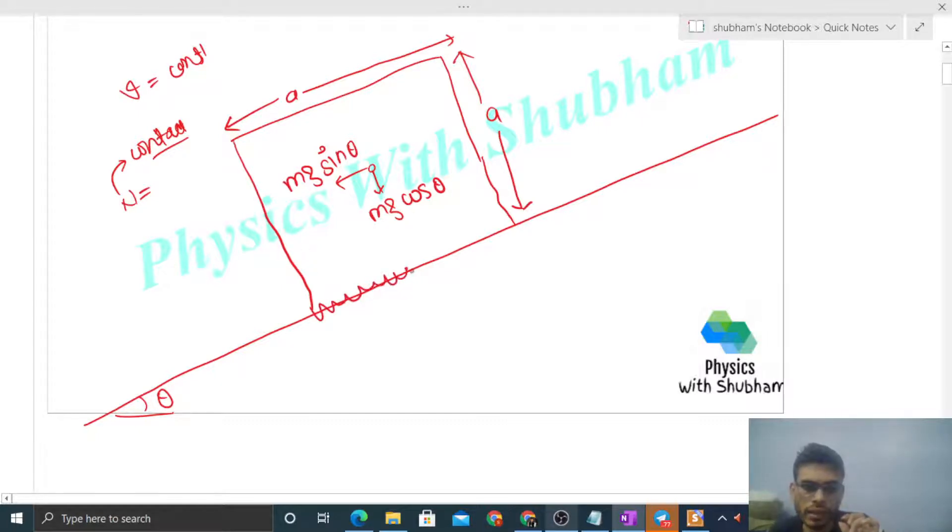You can see there's contact between this block and the inclined surface from here to here. So normal reaction can act anywhere here.